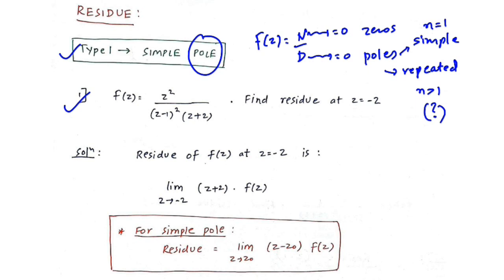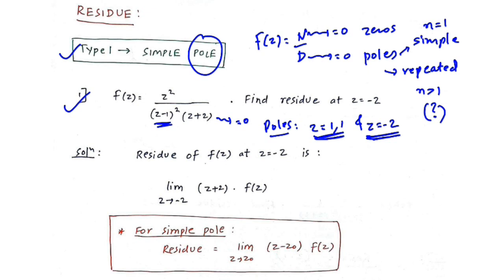To find the poles, equate the denominator to 0. From (z minus 1) squared equals 0, we get z equals 1, 1 — repeated twice. From (z plus 2) equals 0, we get z equals minus 2. The pole at z equals 1 is a repeated pole with order n equals 2, while the pole at z equals minus 2 is a simple pole with order n equals 1.